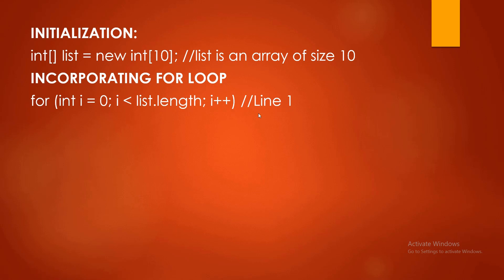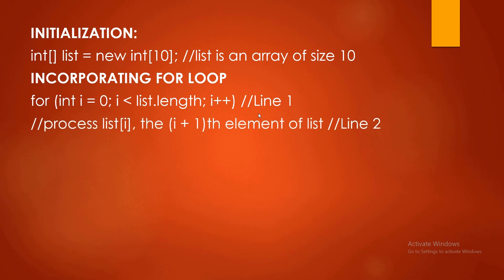So the output would be 0, 1, 2, 3... up to 9, similar to the earlier example. The comment says 'process list[i] and the (i+1)th element of list' — the i+1 refers to the incremental update. Now, in later sample programs, the user will input the data themselves rather than having values pre-declared. We will look at the algorithm and codes incorporated in our sample programs.